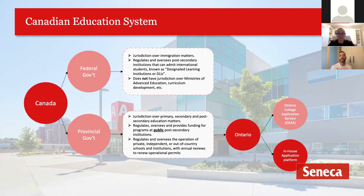Many programs at Seneca admit both Canadian and international students, and the pricing varies because provincial government funding subsidizes education for Canadian citizens and residents. The provincial government also regulates all education institutions — public or private — at every level. Any post-secondary institution operating in Ontario needs accreditation by the Ministry of Advanced Education and Training.